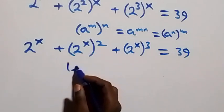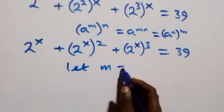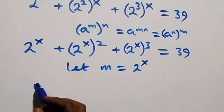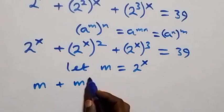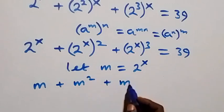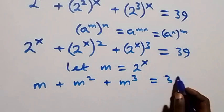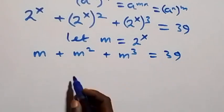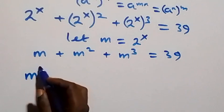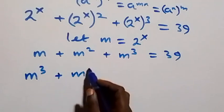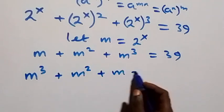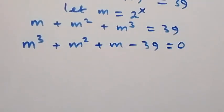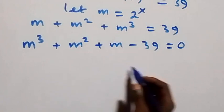From here, two raised to power x is common. Let m equal two raised to power x. Then this equation becomes m plus m squared plus m cubed equals 39. Taking 39 to this side and rearranging, we get m cubed plus m squared plus m minus 39 equals zero.